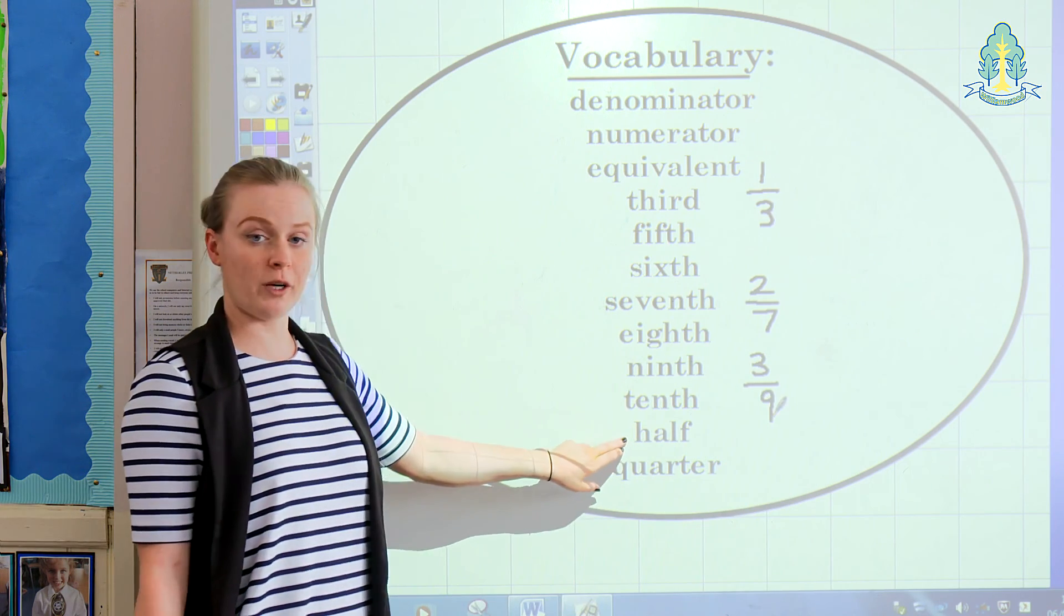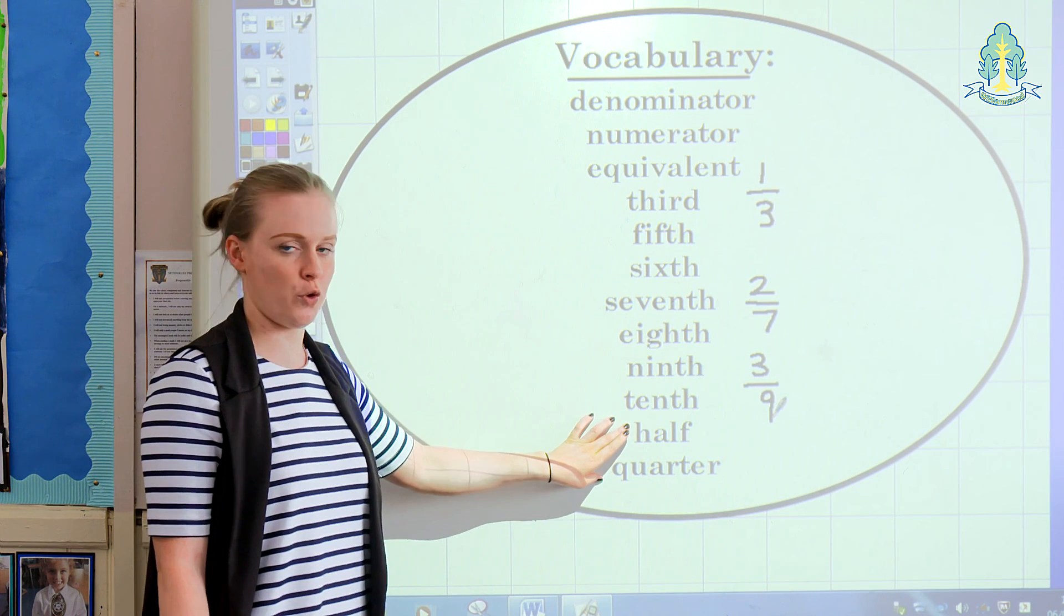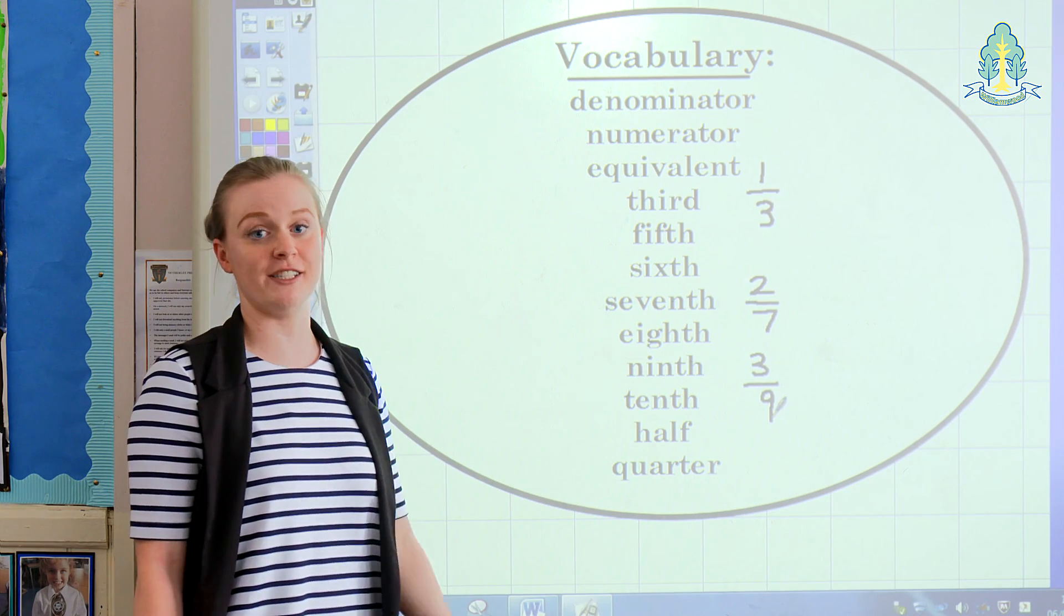The last two words in the list are half and quarter. And it's worth noting that these are the only two where the race analogy does not work. These are just words that the children need to learn.